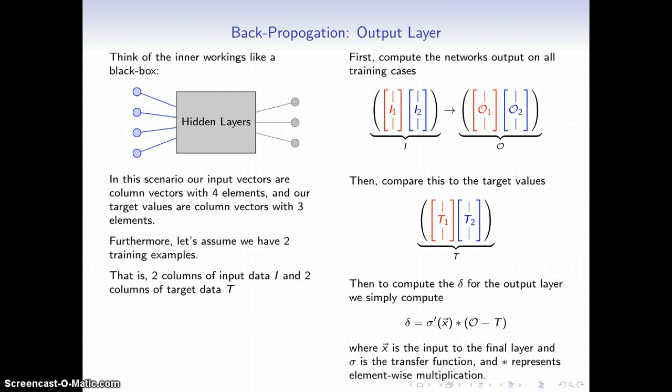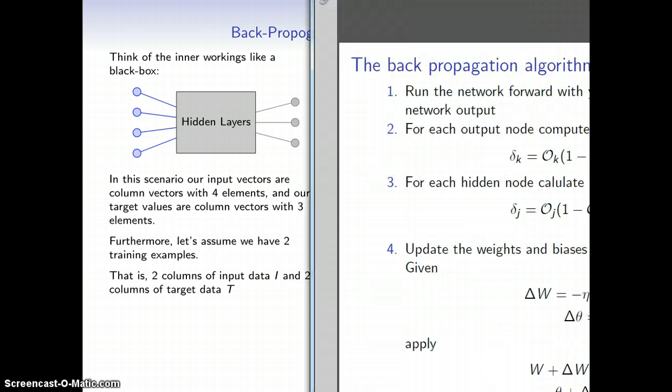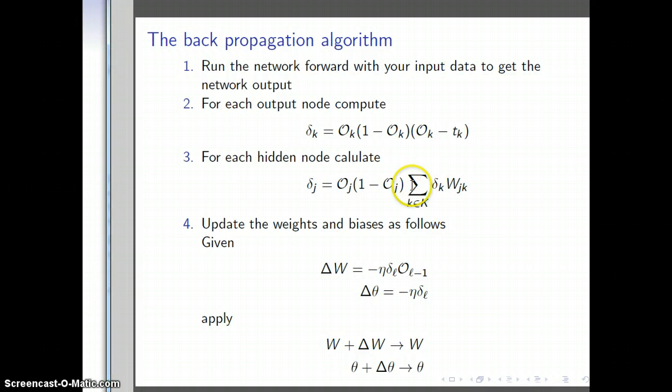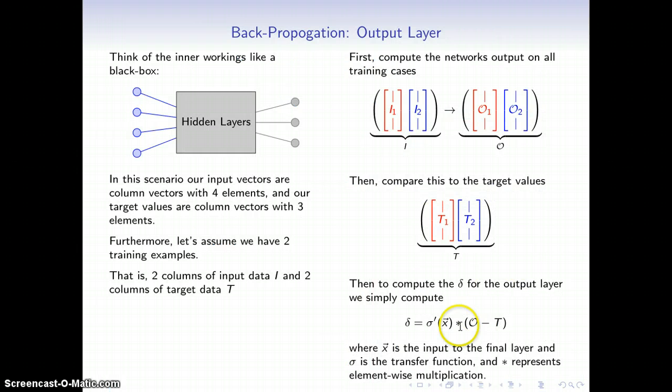Just like before, when we're looking at the output node, essentially all you have to do is compute the difference between the output and the target, and then multiply it by the derivative of the input to the last layer. I take script O, which is this whole matrix. I subtract script T, which is this whole matrix. These have the same exact size, so this makes sense. Then I multiply it by the derivative of our transfer function, sigma, evaluated at the input to each one of these vectors.